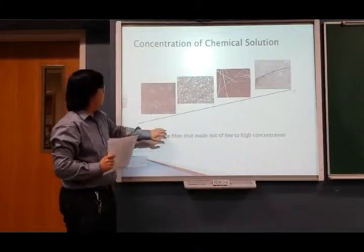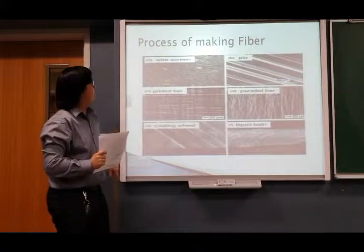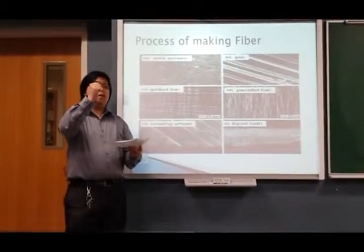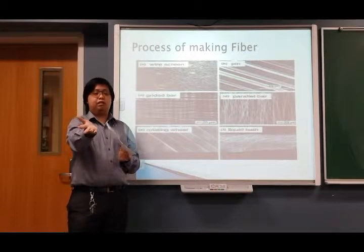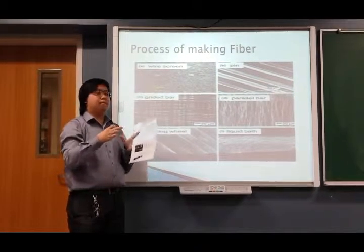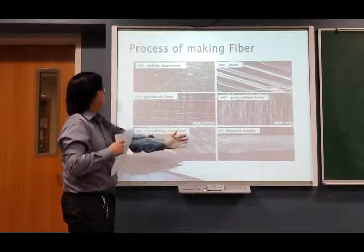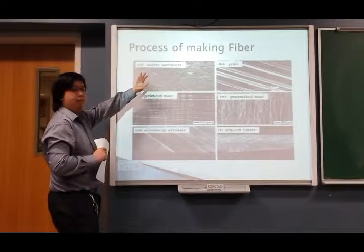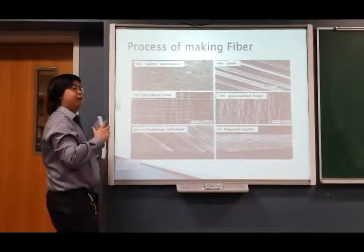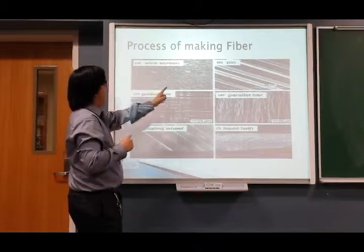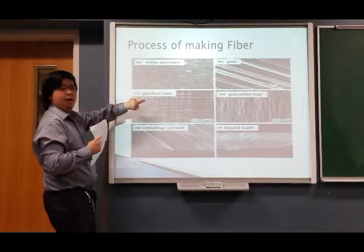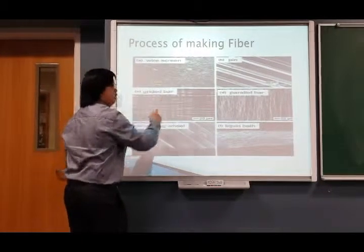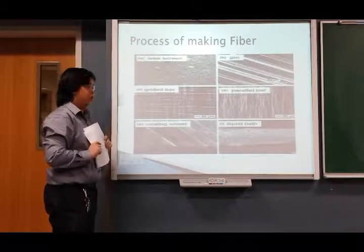Secondly, the process when making the fiber — specifically the collector base — also matters. There are a few kinds of collector bases. When we use a wire screen collector base, the fibers collected will be all randomized. When we use a grinder bar as the collector base, it will produce a crisscross section, which is good.